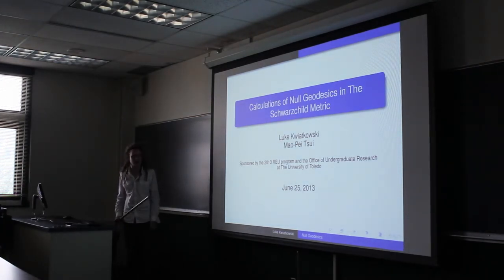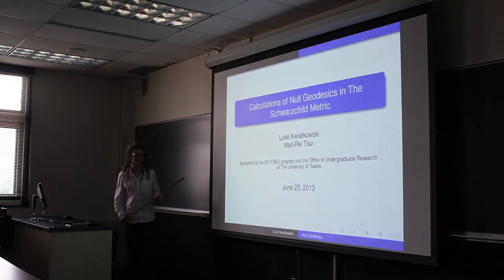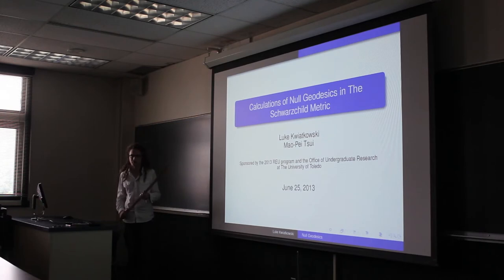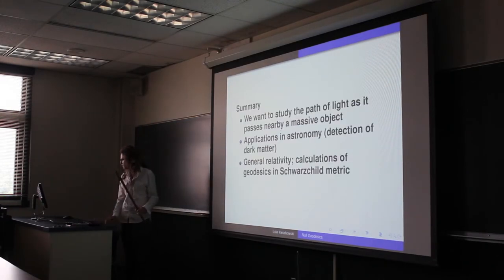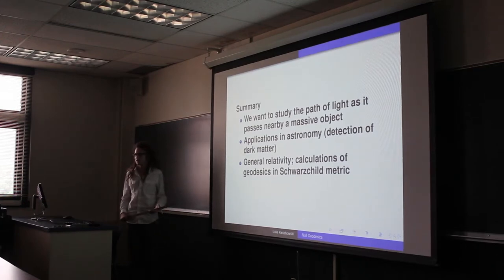So far this summer we've been looking at gravitational lensing, specifically we've been calculating null geodesics in the Schwarzschild metric, and I'll talk more about what that means. Just to summarize, we want to study the path of light as it passes nearby a massive object, such as a cluster of galaxies or a black hole.